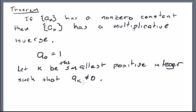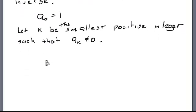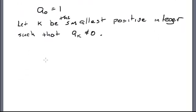If there's no such k, then that says that a_n is the constant sequence whose constant term is one, which is the multiplicative identity. The multiplicative identity is its own multiplicative inverse, and so we're done. So we're going to assume that there exists such a k.